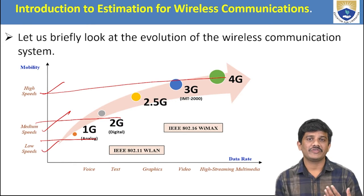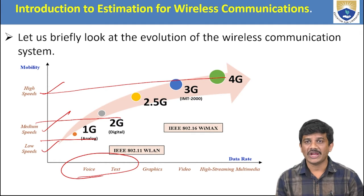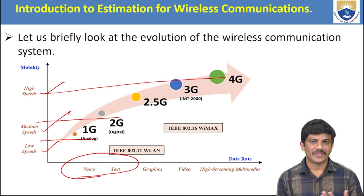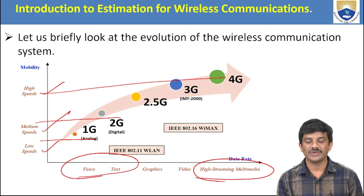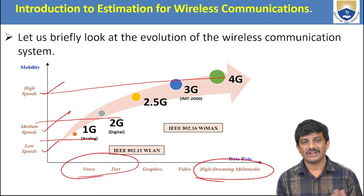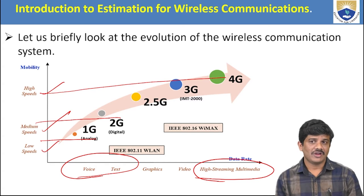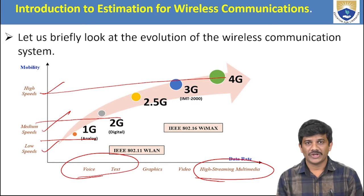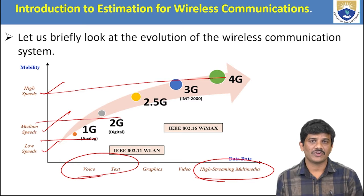After 2G, we could also connect with text. When we entered 3G (third generation), we could use graphics, video, and images and share them with others. In 4G, streaming multimedia and video calls became possible. Comparing all generations: 1G is voice only, 2G adds text, 3G enables sharing images/videos/data, and 4G offers high-speed data with a high data rate.